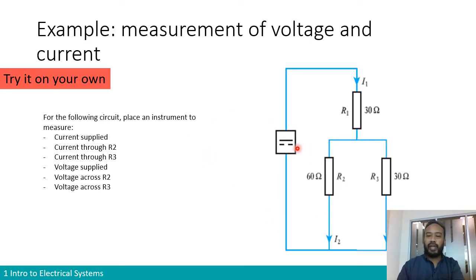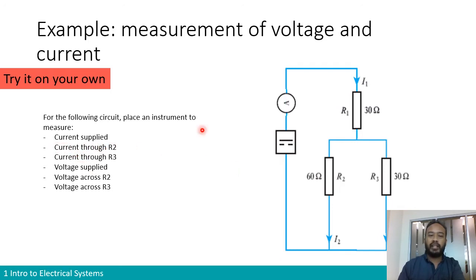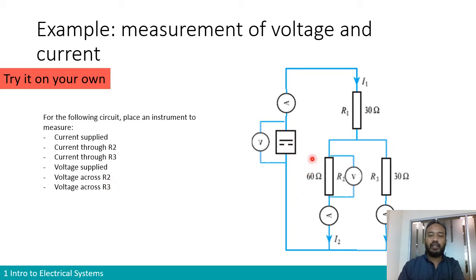Here is another example: a DC supply powering three resistances — R1, and then R2 and R3 in parallel. Measure the supply current by putting an ammeter in series with the power supply. Current through R2: put an ammeter in series with R2. Current through R3: put an ammeter in series with R3. Voltage supplied: voltmeter in parallel with the power supply. Voltage across R2: voltmeter in parallel with R2. Voltage across R3: voltmeter in parallel with R3.